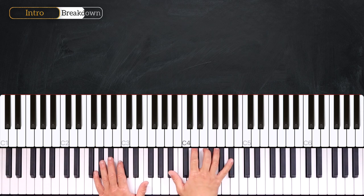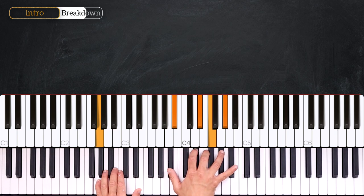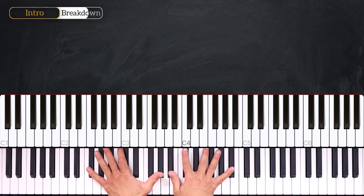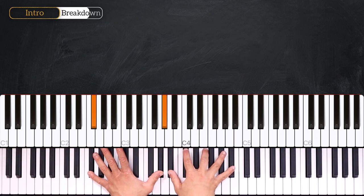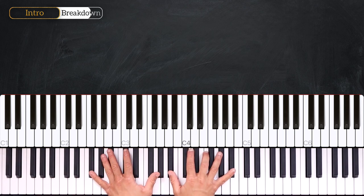Then from here, so we are on the Eb sus2 over G. We'll repeat the notes of the right hand. But we'll flick from an Ab into the top Bb. Like this. Then we'll play the Gb major 9. We'll play the same notes on the right hand. And we'll flick again from an Ab into a Bb. And we'll come back to the Eb sus2 over G.